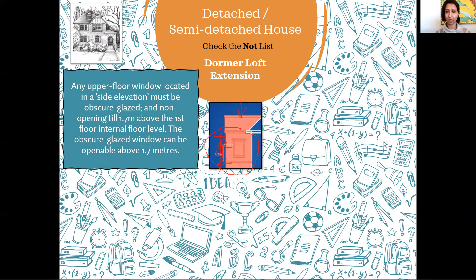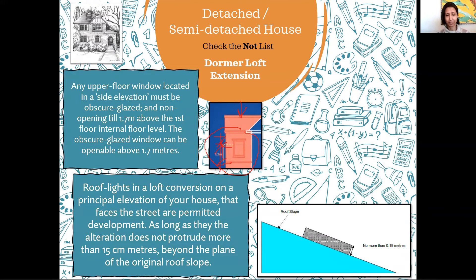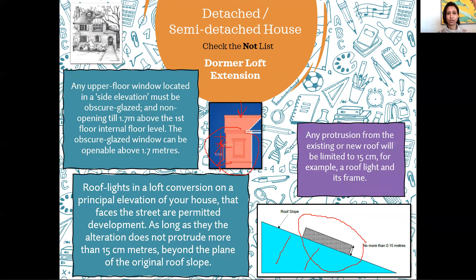You cannot add a dormer to the front roof, but you can add roof lights. Roof lights will come under permitted development as long as they don't protrude or rise up more than 15 centimeters — 0.15 meters or 150 millimeters — beyond the surface of your original roof, measured perpendicular to the roof slope. This includes the frame and outside glass of the roof light. The same rule of 15 centimeters protrusion applies to roof lights on your rear existing roof or new extension dormer roofs. Anything more than that will not be part of PD.